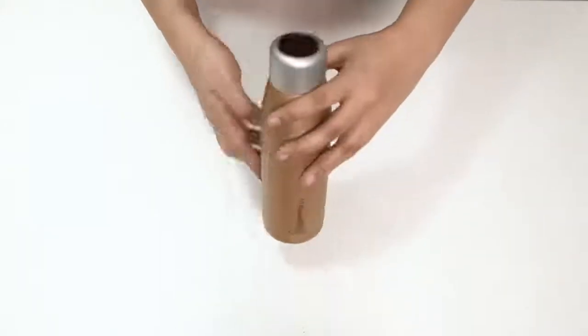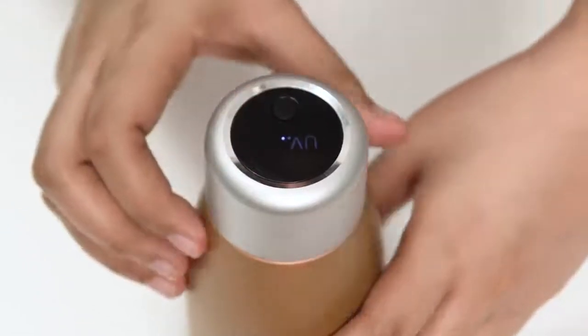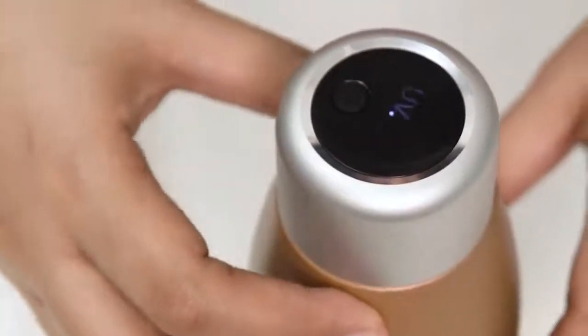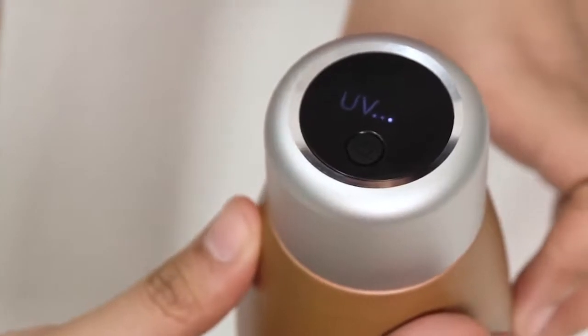Now let us learn how to use it. Short press the UV sterilizing power button to activate the sterilizing process. The UV LED display will light up.